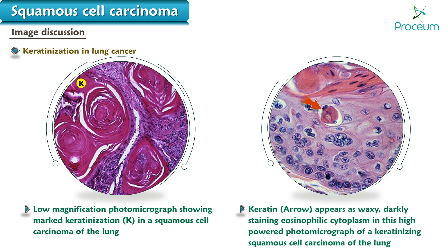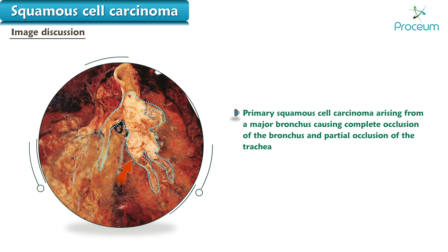A low magnification photomicrograph shows marked keratinization in a squamous cell carcinoma of the lung. Keratin appears as a waxy, darkly staining eosinophilic cytoplasm in this high-powered photomicrograph of a keratinizing squamous cell carcinoma of the lung. Primary squamous cell carcinoma arising from a major bronchus causes complete occlusion of the bronchus and partial occlusion of the trachea.